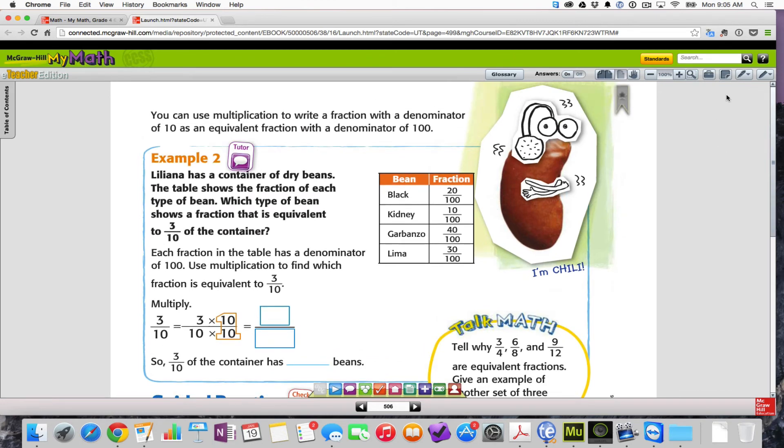It says you can use multiplication to write fractions with a denominator of ten as an equivalent fractions with denominators of one-hundredths. So, this is focusing more on the tens and the hundreds. Liliana has a container of dry beans. The table shows the fraction of each type of bean. Which type of bean shows the fraction is equivalent to three-tenths of the container?